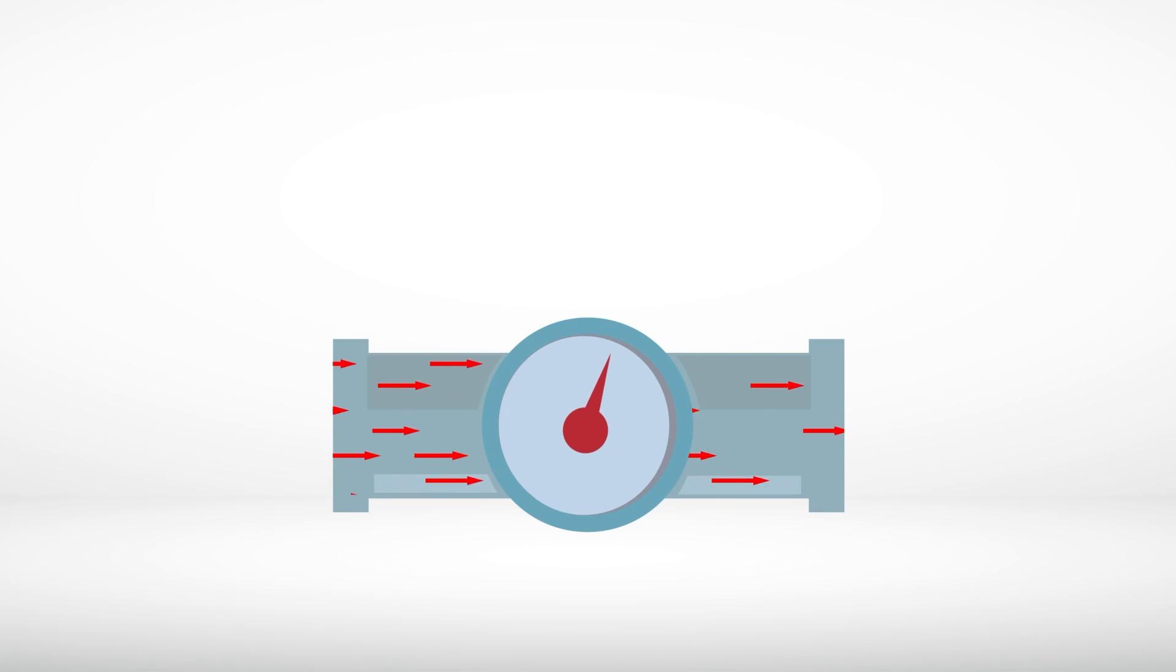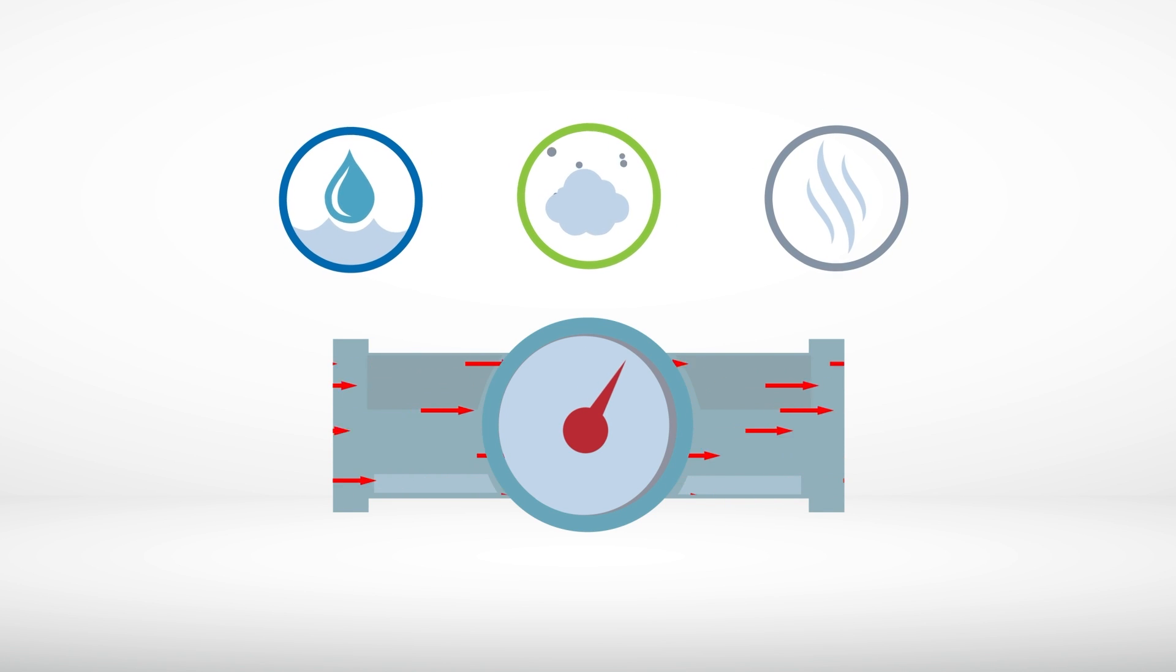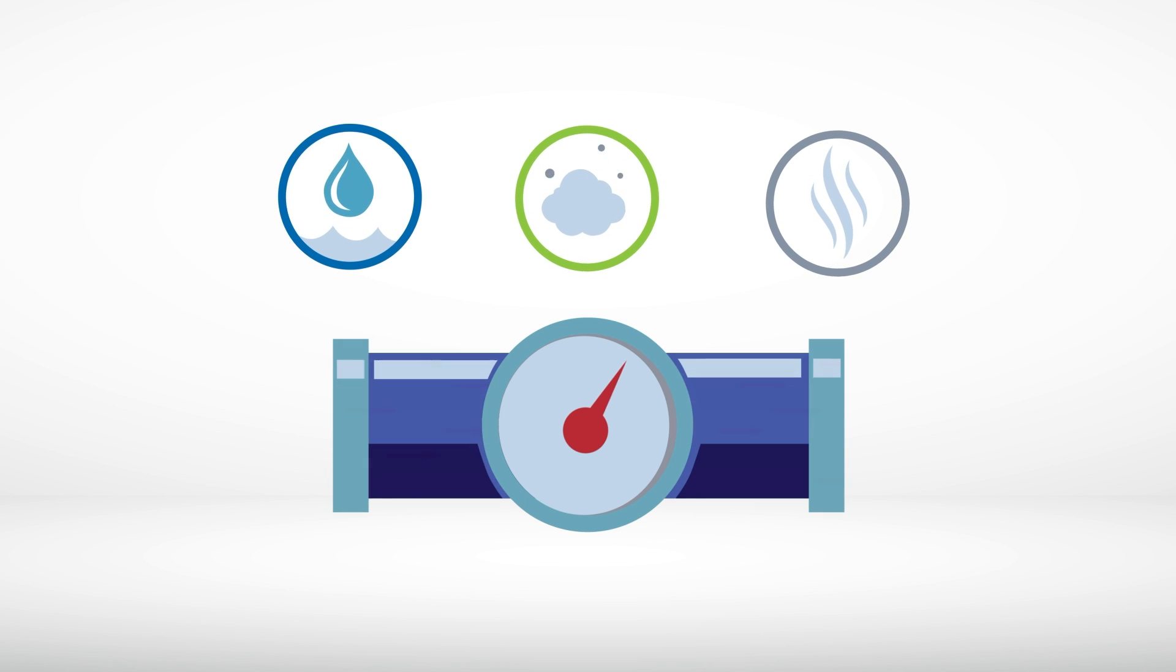A flow meter is a device that measures the amount of liquid, gas, or vapor moving through a pipe within a given amount of time. And there are two widely used methods of operation when considering flow meters.